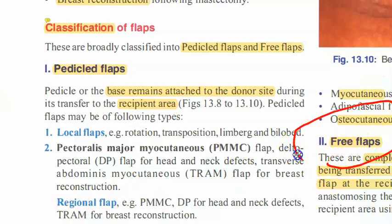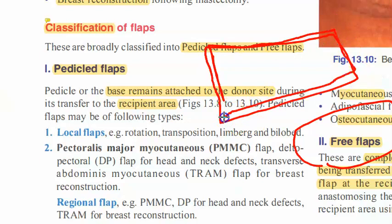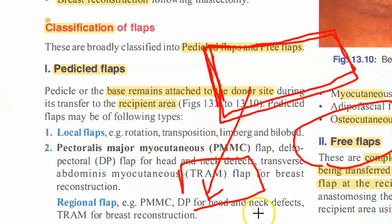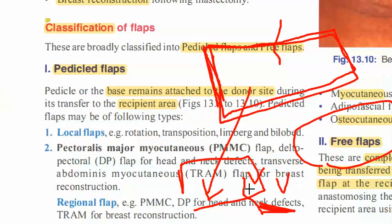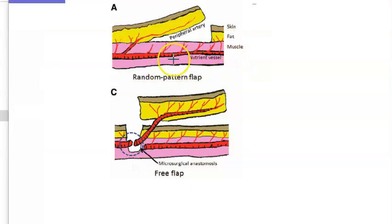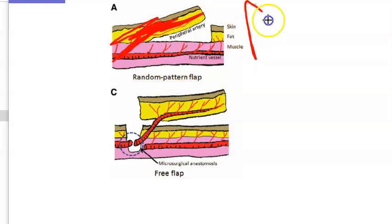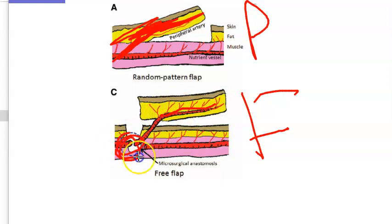The free flap means you have taken the flap and completely detached it from the donor area, then transferred it to the recipient area where the vascularity of the flap is immediately restored. Whatever blood supply this flap had, you take that vessel and attach it to the recipient's vessel — you restore this vascularity. This is done with microsurgical anastomosis.